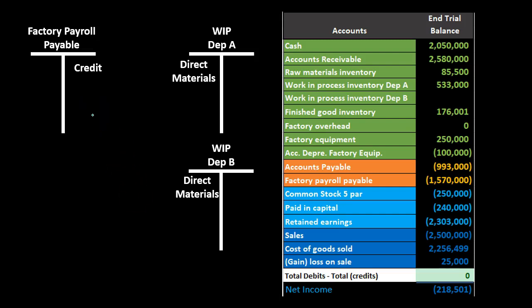We credit Factory Payroll Payable rather than cash. Using a payable account indicates a payroll item is being processed. So we credit the liability as if we haven't yet paid payroll, and debit the work in process instead of wages expense, because the workers are producing inventory that's not yet completed — therefore work in process.